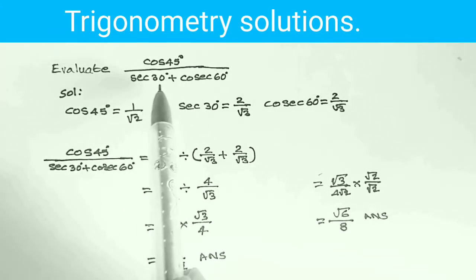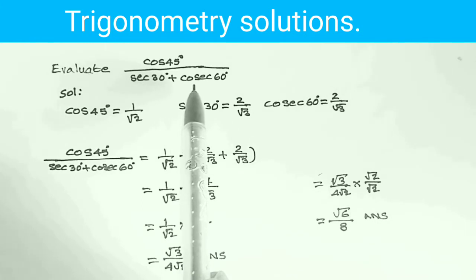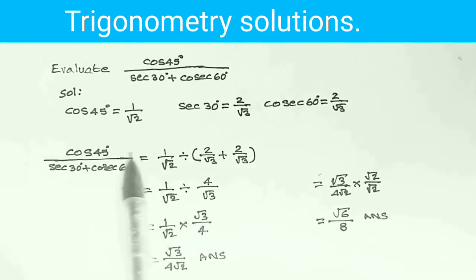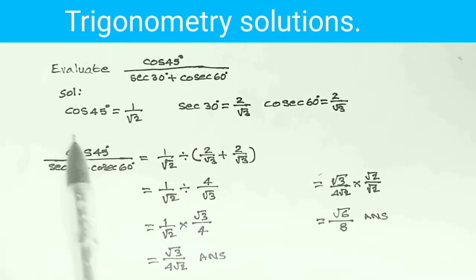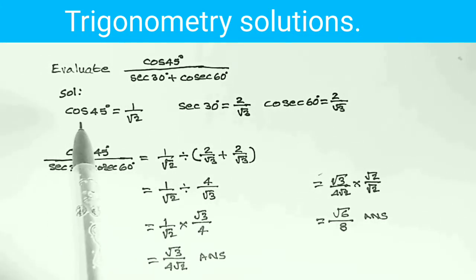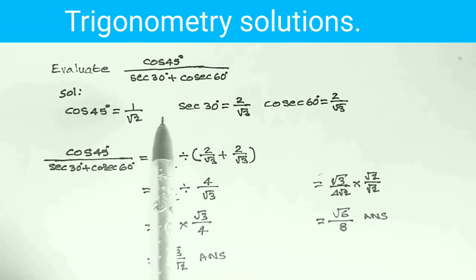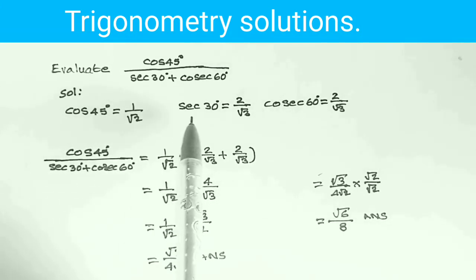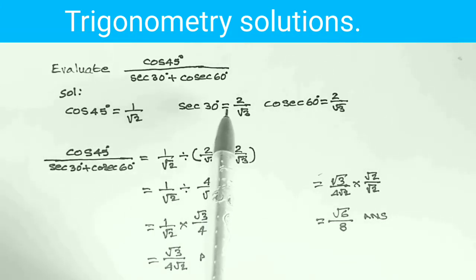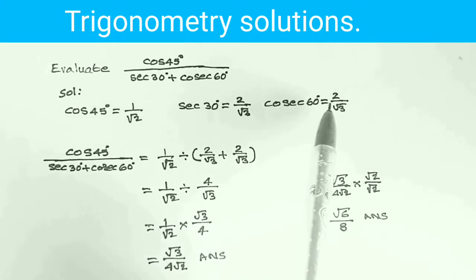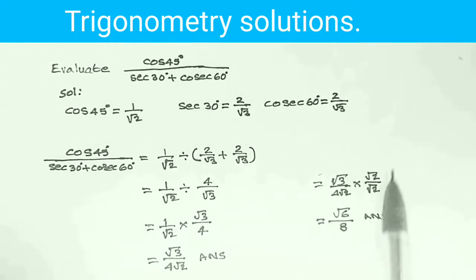Evaluate cos 45 degrees over secant 30 degrees plus cos 60 degrees. Solution: cos 45 degrees is equal to 1 by root 2, secant 30 degrees is equal to 2 by root 3, cos 60 degrees is equal to 2 by root 3.